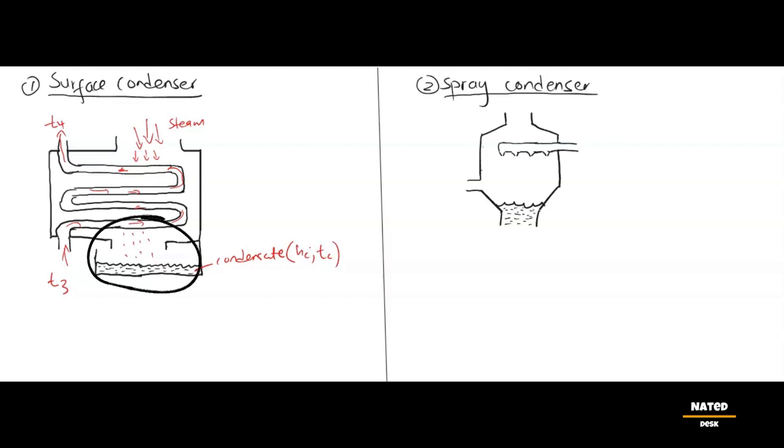5. Removal of non-condensable gases. As the steam condenses, some non-condensable gases may be present. These gases, such as air, need to be removed from the condenser to maintain the vacuum condition. Vacuum pumps or other devices are used to extract these gases and maintain the desired vacuum level. We will talk about this later in details using Dalton's law regarding partial pressure theory.